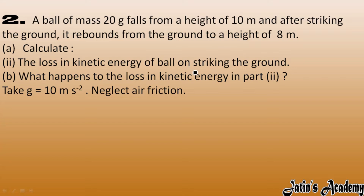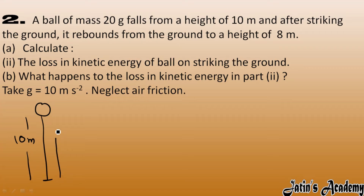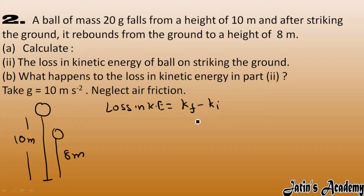The ball falls from 10 meter and after rebounding goes to a height of 8 meter. Loss in kinetic energy means final kinetic energy minus initial kinetic energy. Since there is a loss, we subtract the higher value from the lower — that is, initial minus final. Initial kinetic energy is more, final kinetic energy is less. Initial kinetic energy is already calculated as 2 joule.